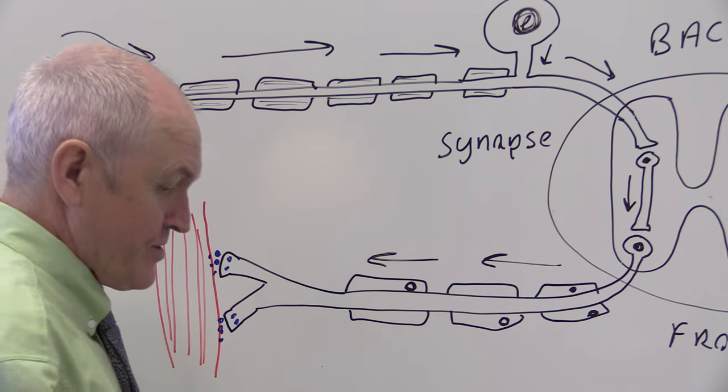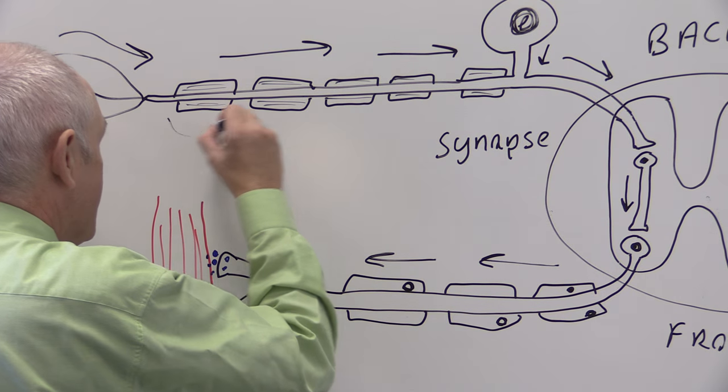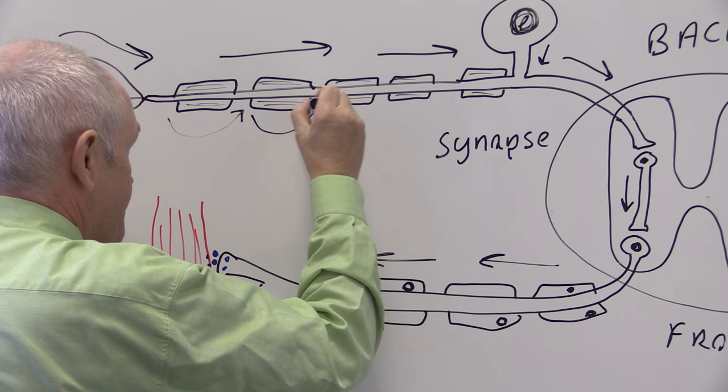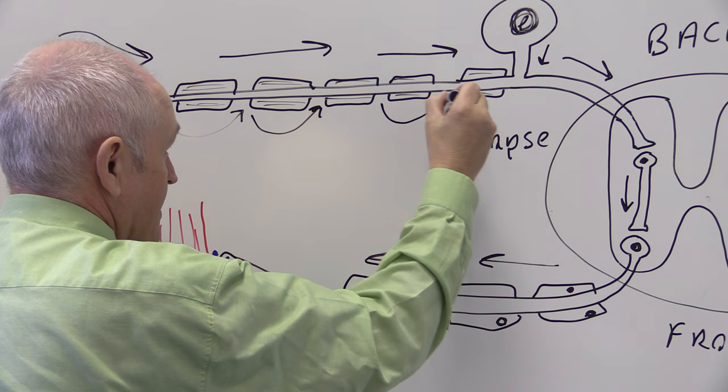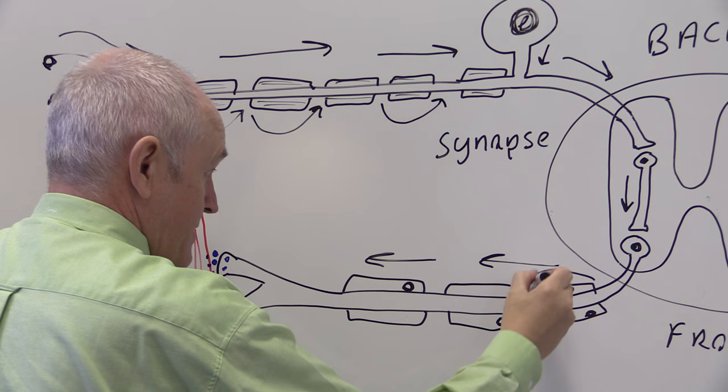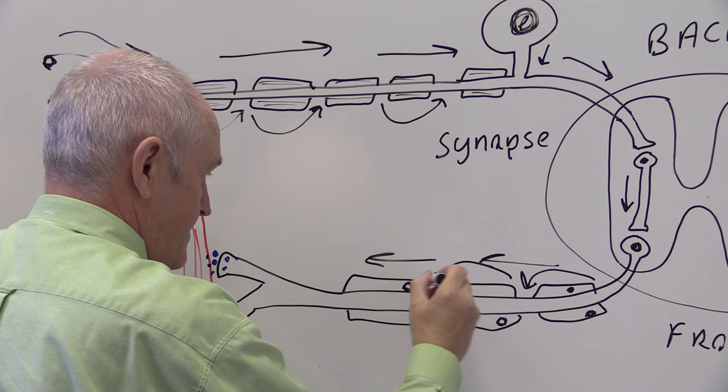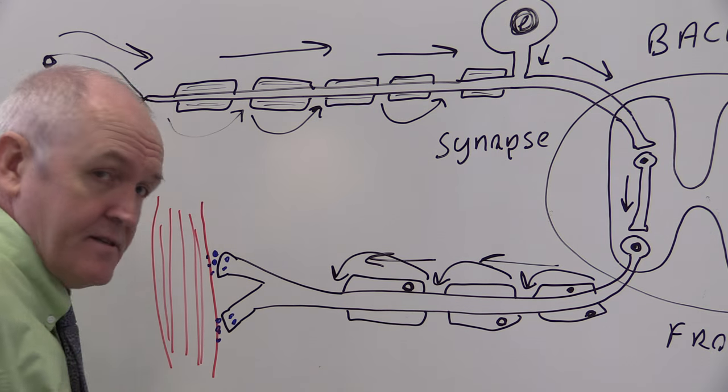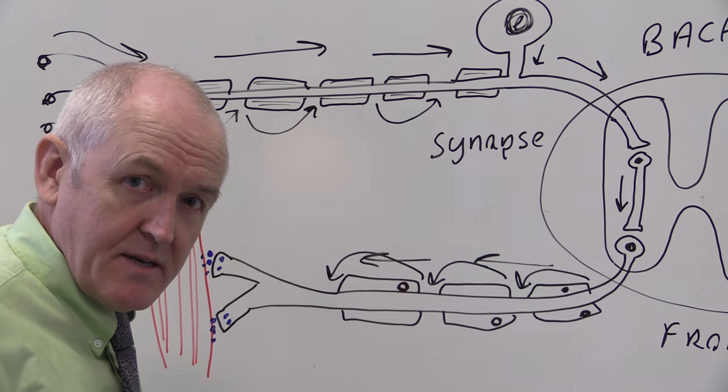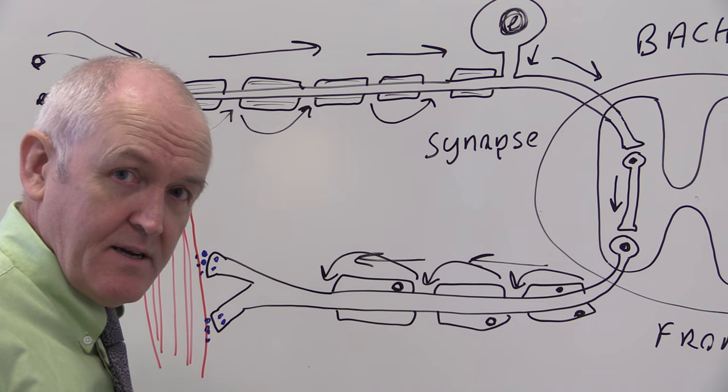And of course, the transmission is this very rapid saltatory transmission, maybe 100 meters per second, bouncing from one node of Ranvier to the next, meaning that this can all happen very quickly to stop us from being injured.